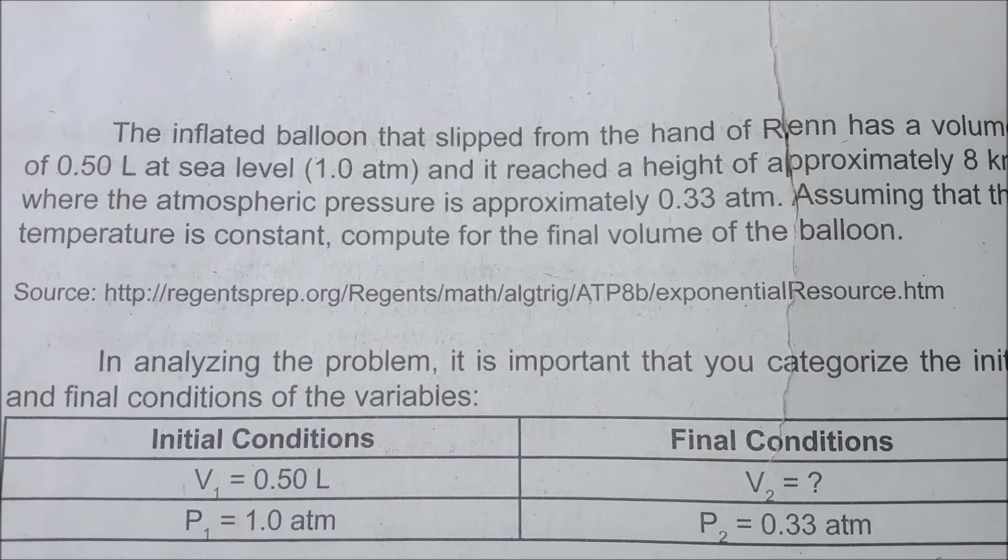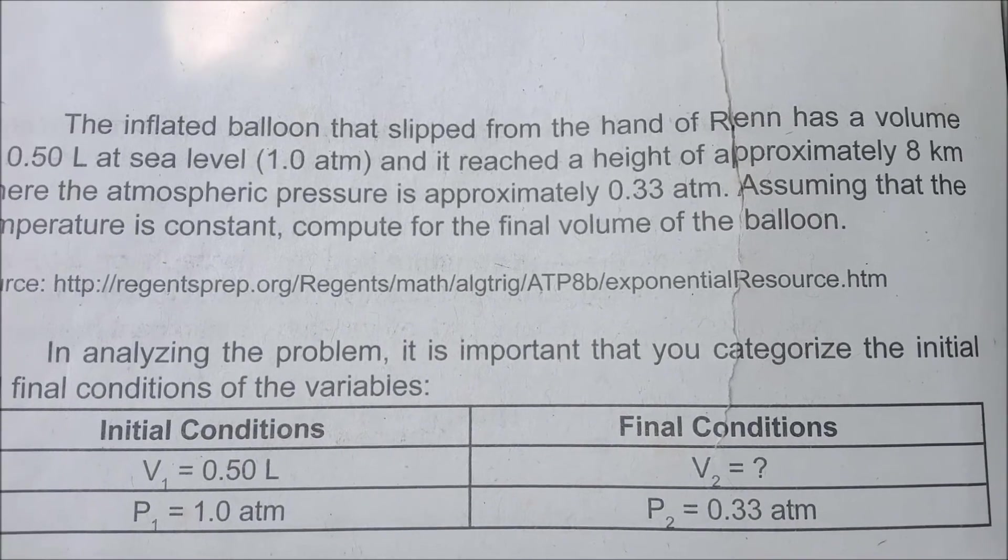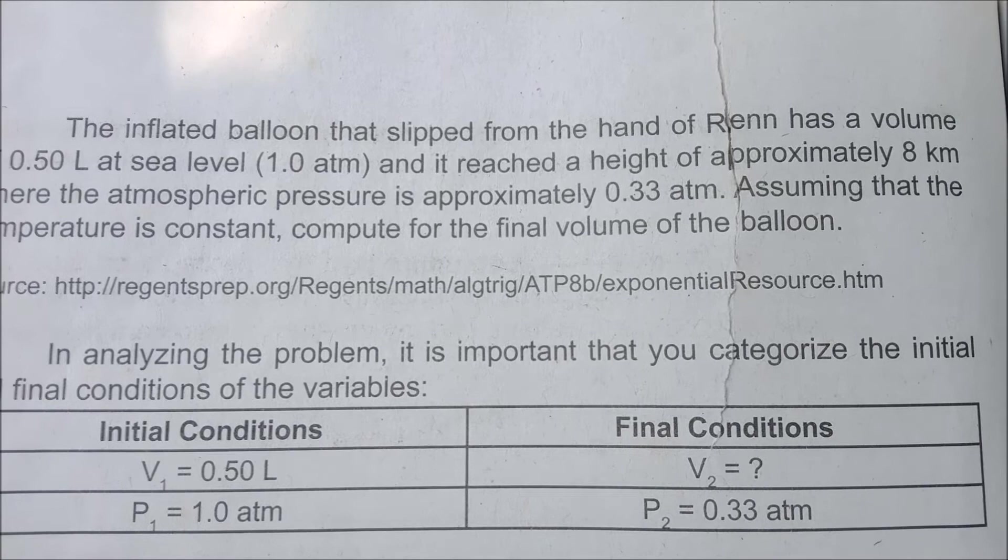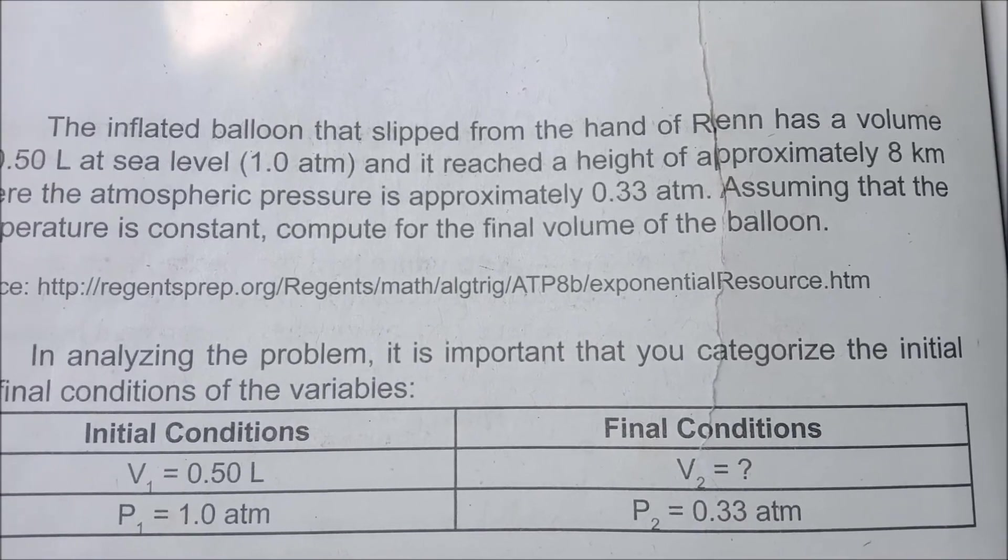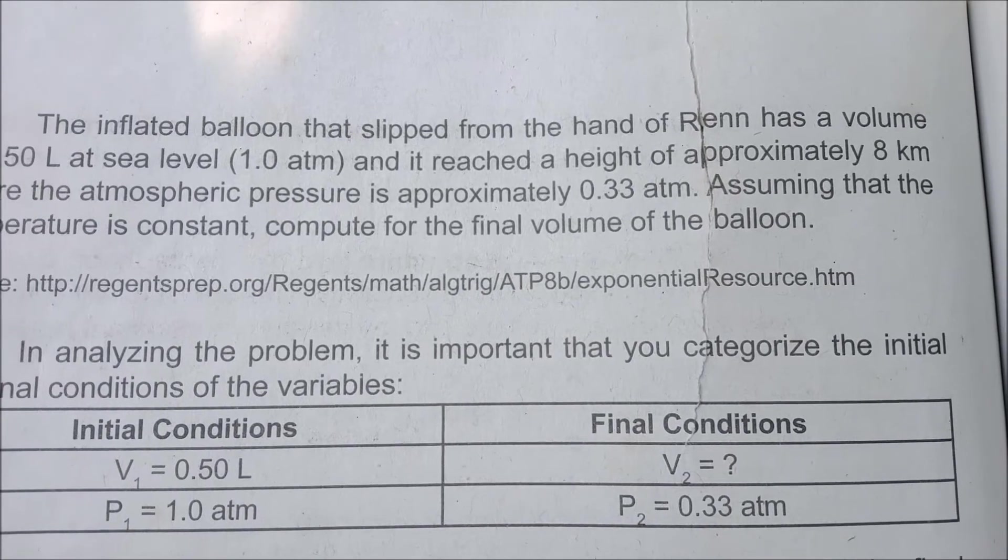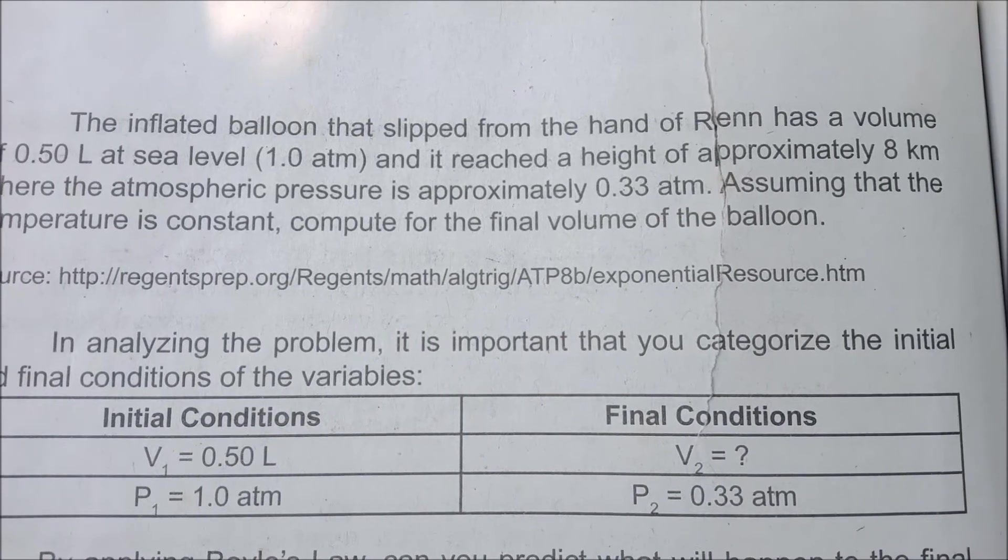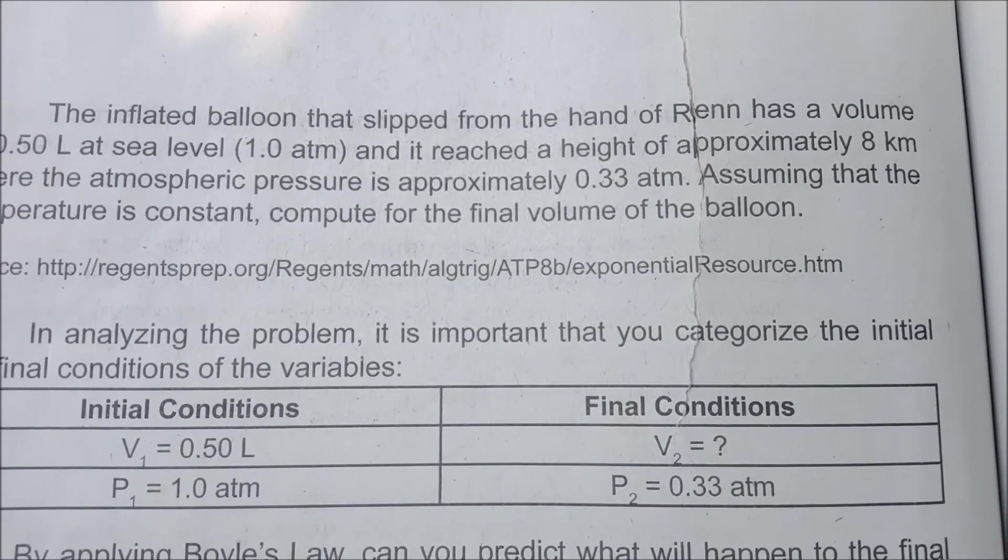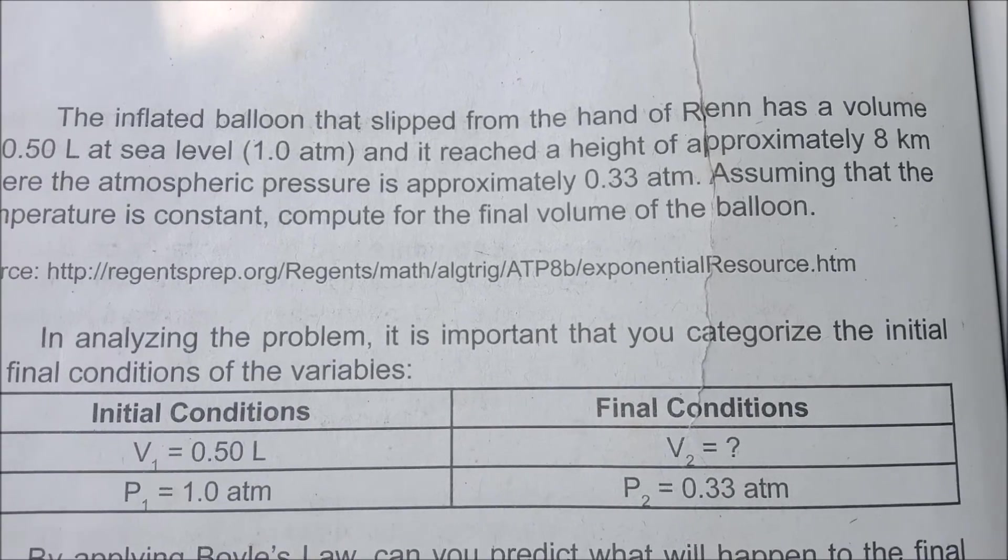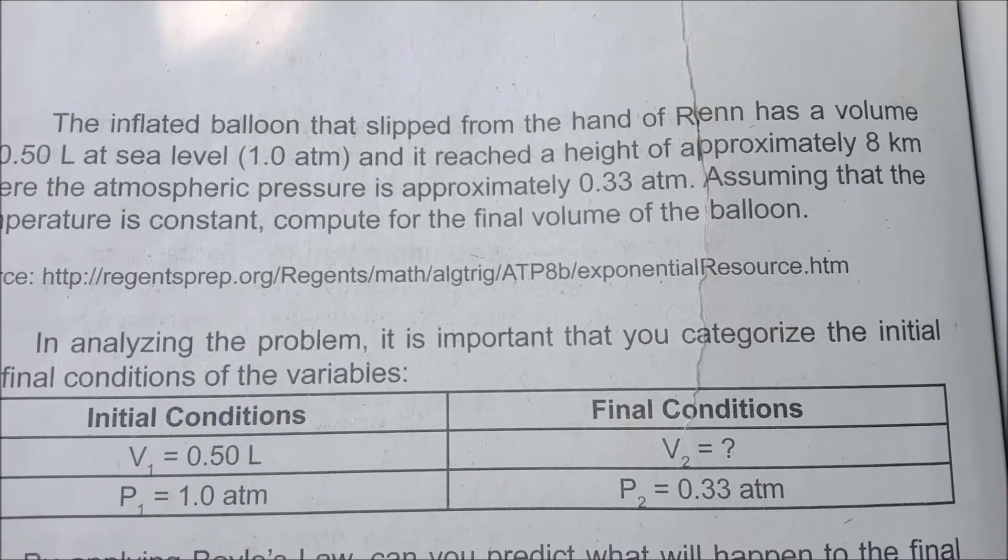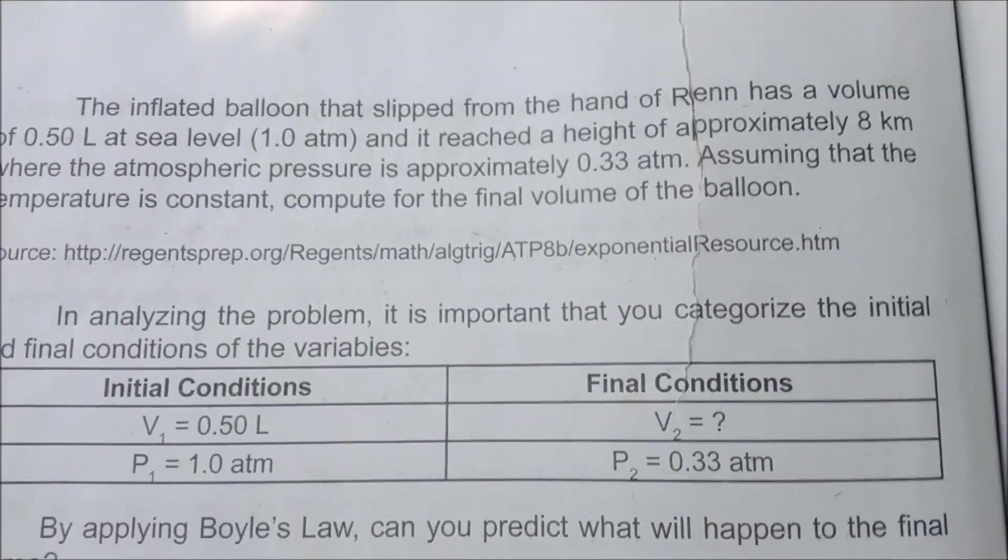There was a change in the pressure. From 1 atmosphere, it became 0.33 atmosphere. Obviously, it decreased in value. Now, what happens to the volume of the balloon? In this problem, you're obviously looking for V2, or the final volume of the balloon, after the pressure decreased from 1 atmosphere to 0.33 atmosphere.